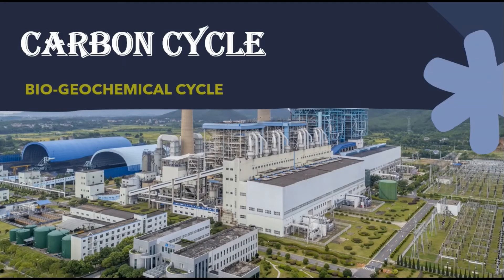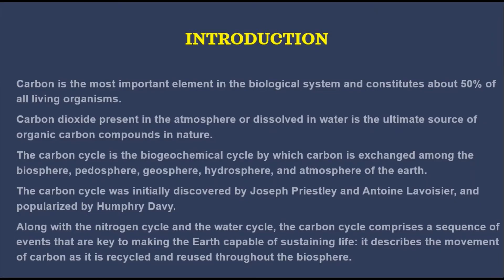We are going to discuss the carbon cycle, which is one type of biogeochemical cycle. Carbon is considered the most important element in biological systems, constituting about 50% of all living organisms. Carbon present in the atmosphere or dissolved in water is considered the ultimate source of any organic compounds in nature. The carbon cycle is a biogeochemical cycle by which carbon is exchanged among the biosphere, pedosphere, geosphere, hydrosphere, and atmosphere of the earth.